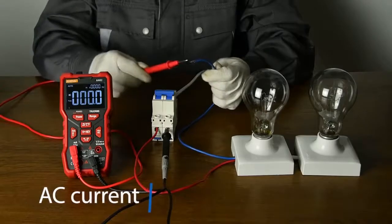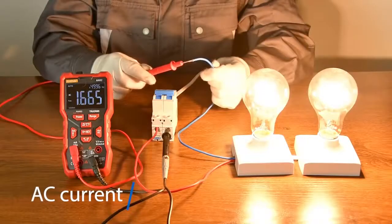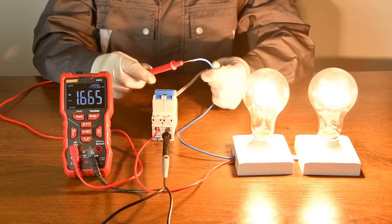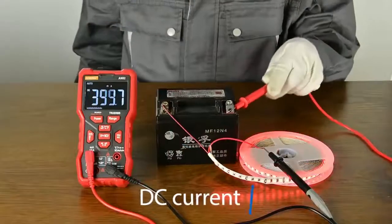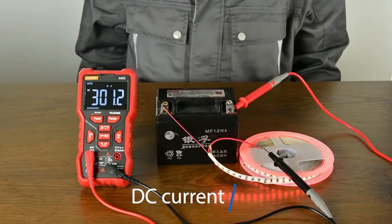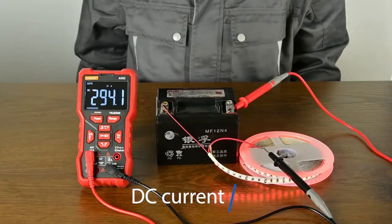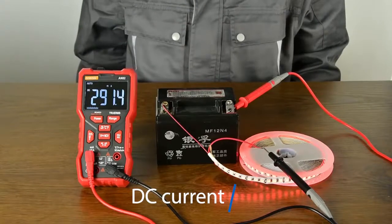DC current measurement. The current must be connected in series and cannot be directly measured.